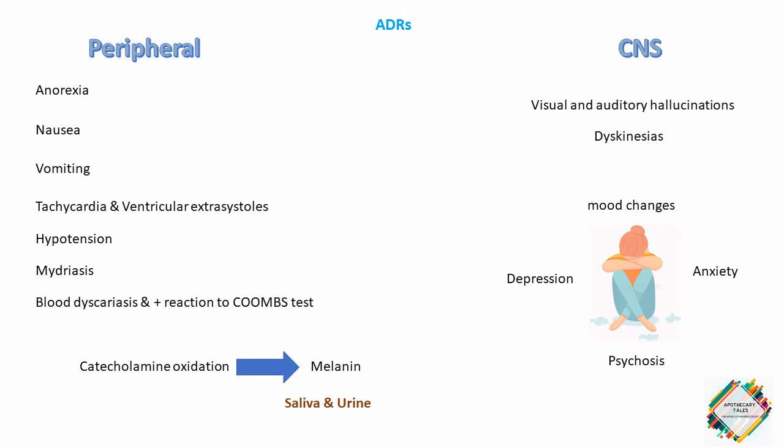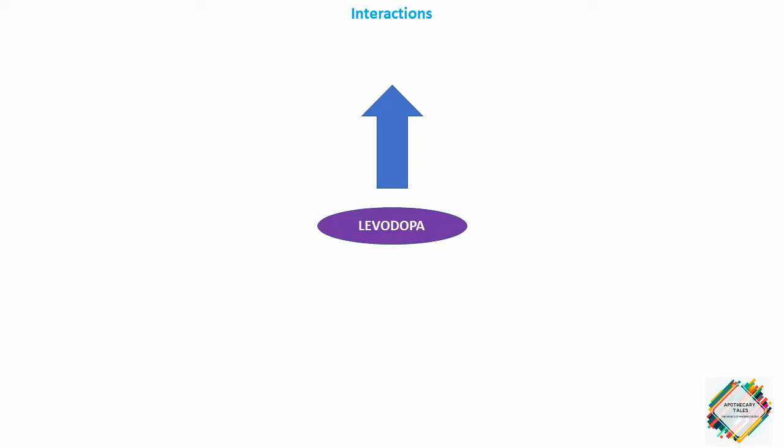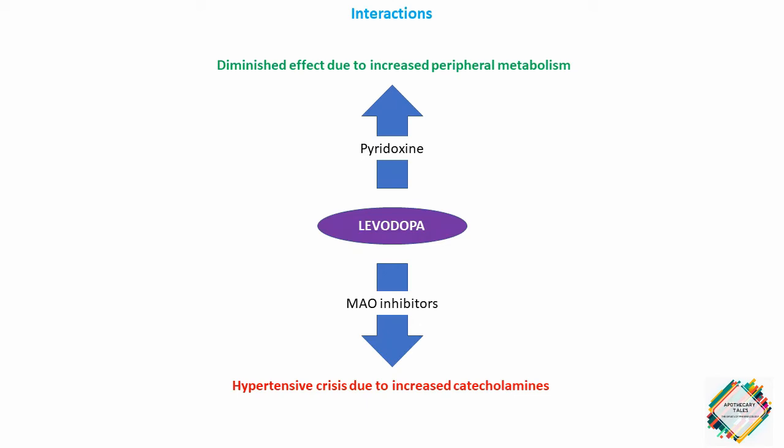There are certain interactions observed with levodopa and carbidopa. The vitamin pyridoxine increases the peripheral breakdown of levodopa and diminishes its effectiveness. Concomitant administration of levodopa and non-selective MAO inhibitors such as phenelzine can produce a hypertensive crisis caused by enhanced catecholamine production, because the monoamine oxidase enzyme is responsible for the metabolism of catecholamines. Therefore the concomitant administration of these agents is contraindicated, and in many psychotic patients levodopa exacerbates the symptoms possibly through the build-up of central catecholamine.